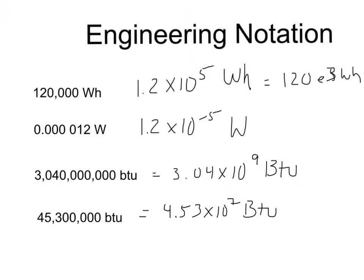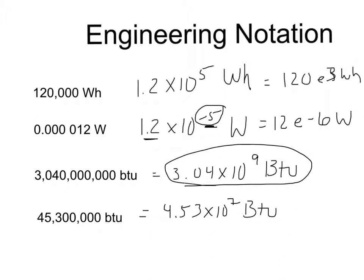It gets a little more complicated with small numbers. The exponent is going to get smaller, so we subtract from it. In this case, subtracting one gets us to minus six, which means we move the decimal place over one, giving us 12 times 10 to the minus sixth watts. Now, sometimes the exponent is already at a multiple of three — in that case, we don't have to change anything. For example, 3.04 times 10 to the 9th BTU is already in engineering notation.